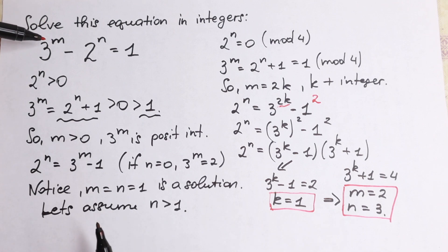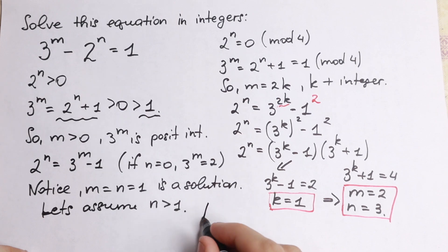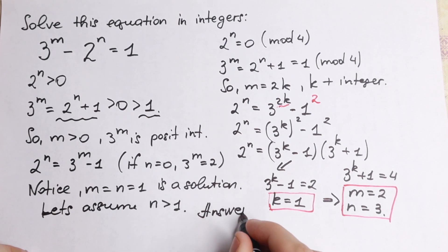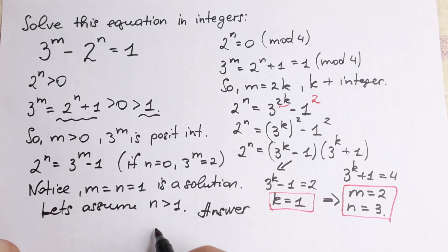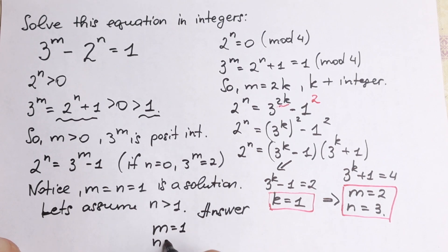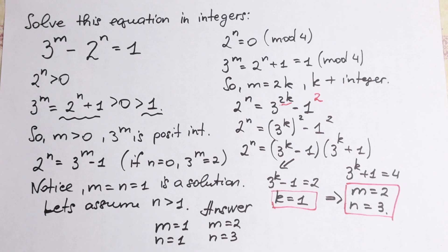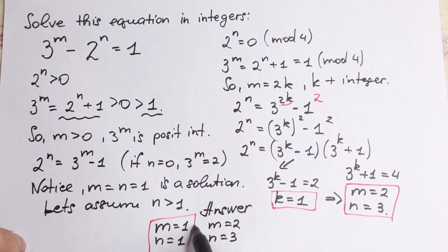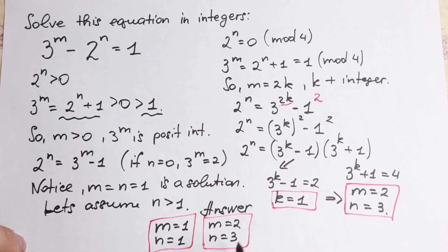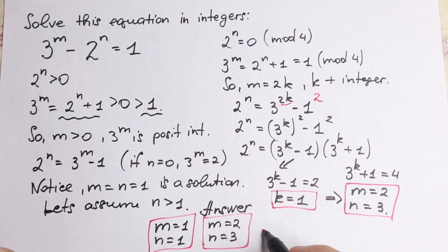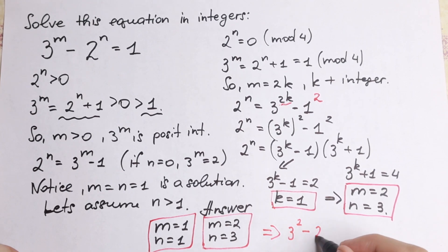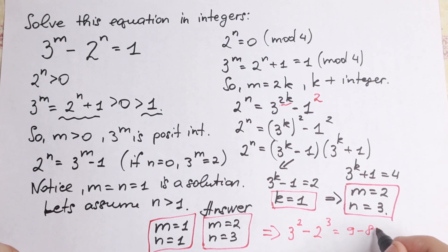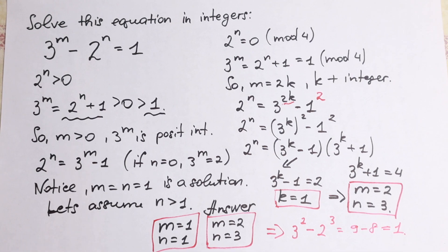So let's write our final answer. The first pair is m equal to 1 and n equal to 1, and the second pair is m equal to 2 and n equal to 3. So we have two pairs of solutions. We can verify: 3 squared minus 2 cubed equals 9 minus 8 equals 1. So as you can see, we have two pairs of roots.